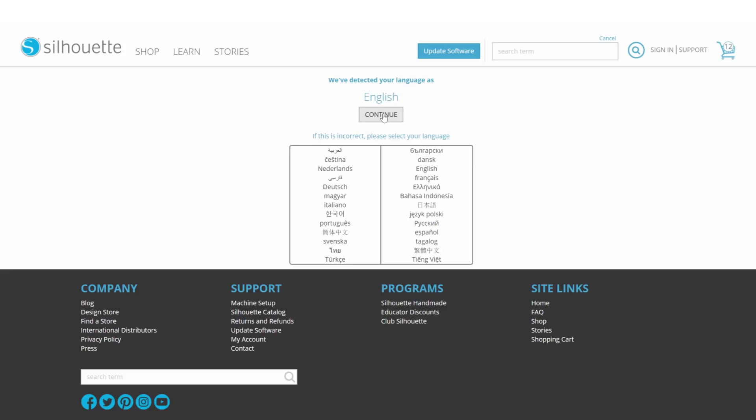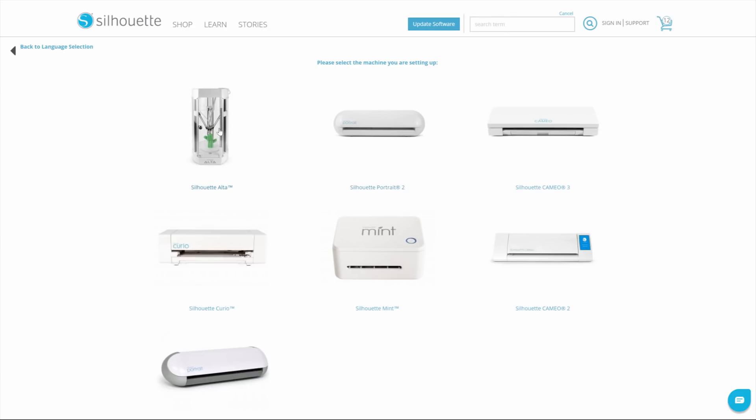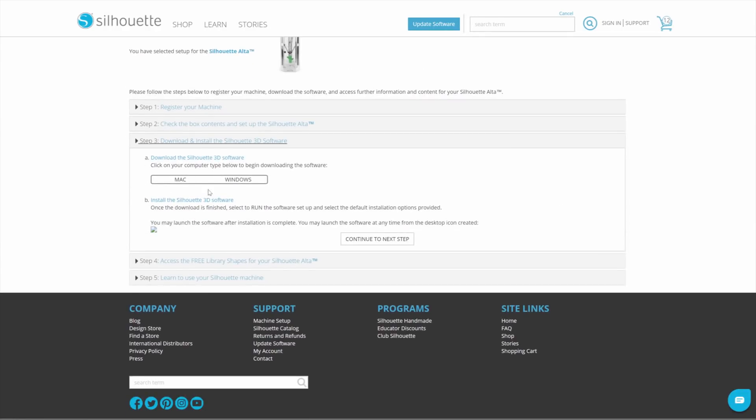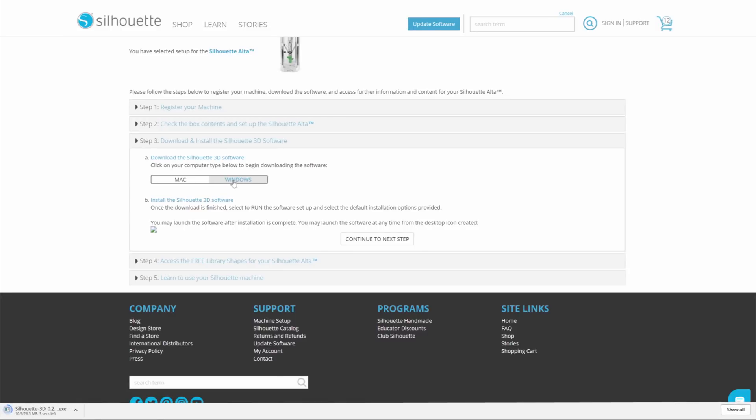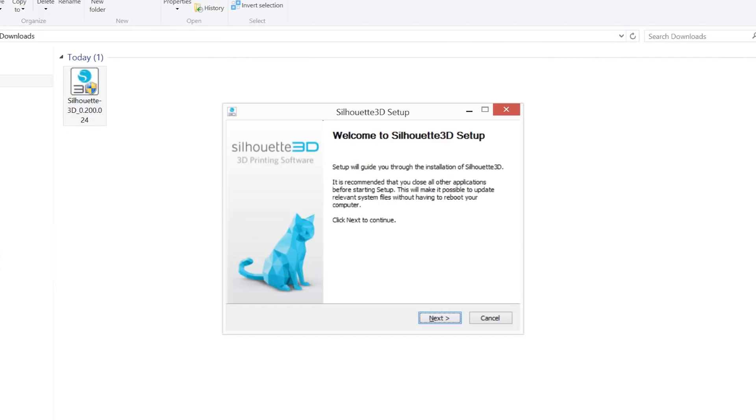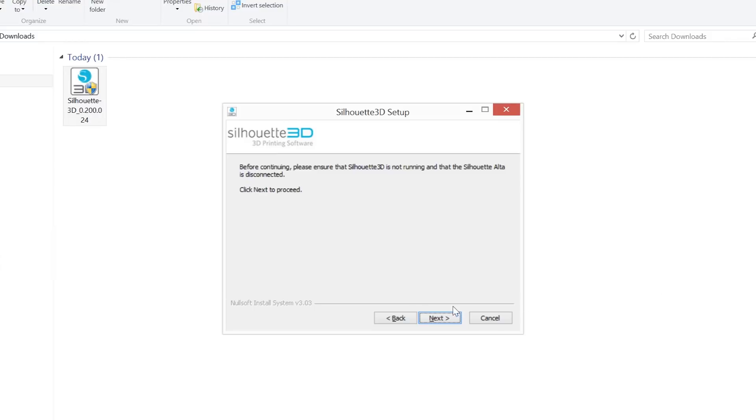Select a language and then select the Alta machine. Click on Step 3: Download and install the Silhouette 3D software. Click on the option for your operating system. Once the download is complete, run the installation file and proceed through the on-screen steps to install and set up your software.